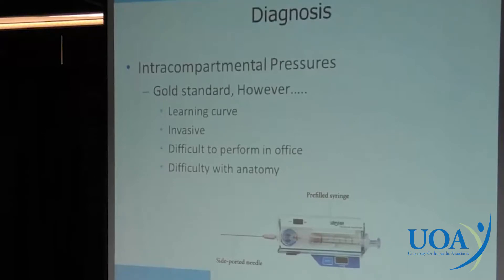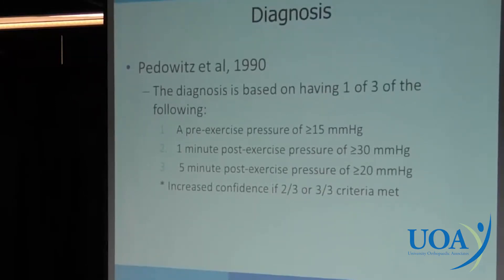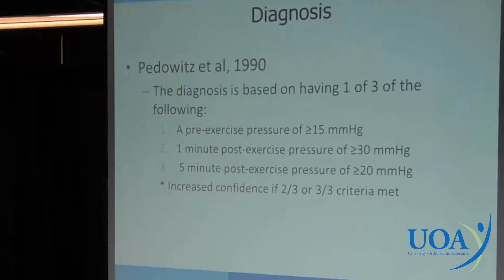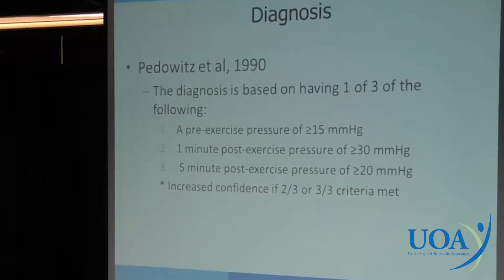The difficulty is it's sometimes hard to know if you're actually in the deep posterior compartment, which is fairly frequently involved — the other compartments are easier to confirm. Pedowitz was the one who came up with the criteria we're all familiar with. Most patients' resting muscles are around 5 mmHg, but these patients, because of their anatomy, muscle girth, or venous outflow, have a resting baseline that's already high, setting them up for failure. The criteria are: resting pressures of 15 mmHg or more; one minute after exercise, over 30 mmHg — which in the traumatic world is an indication for the operating room; and at five minutes of rest, still over 20 mmHg. If you have one of these, you're considered to have chronic exertional compartment syndrome; two or three out of three gives you much more confidence in your diagnosis.